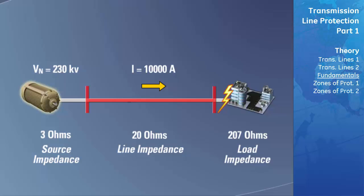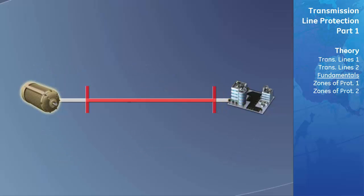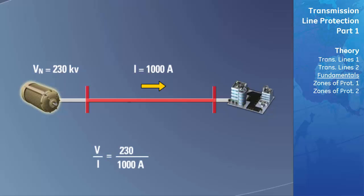The operating principle of distance protection for transmission lines works in the following way. The magnitude of current and voltage is measured at the beginning of the transmission line, and using these measurements calculates a ratio of the voltage over the current. This ratio will then give you a value that is equal to the impedance of the total power system. When a fault occurs on the power system, thus cutting off the path of current to some of the load, the impedance of the power system will decrease. This decrease in impedance will cause the current to increase and the voltage to decrease slightly, thus changing the ratio of the voltage over the current to match the new impedance of the line.